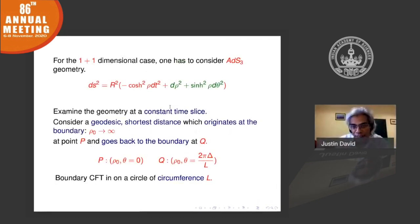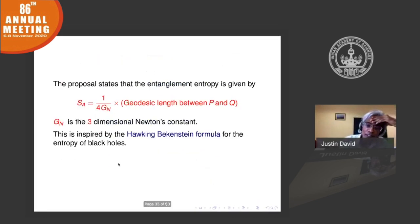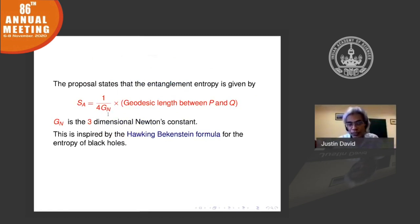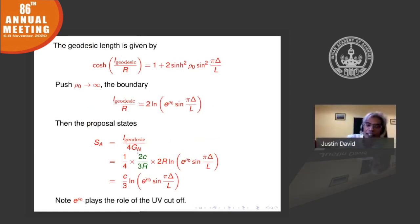On a constant time slice — the hyperboloid — you take the two points P and Q and find the shortest length between them. You then use a formula very similar to the Hawking-Bekenstein formula: S = (1/4G_N) × geodesic length, where G_N is the three-dimensional Newton's constant because gravity lives in three dimensions. Working out this formula and using the known holographic relation between Newton's constant and the central charge, you get (C/3) log of the periodic function — exactly the same formula obtained by field-theoretic techniques.